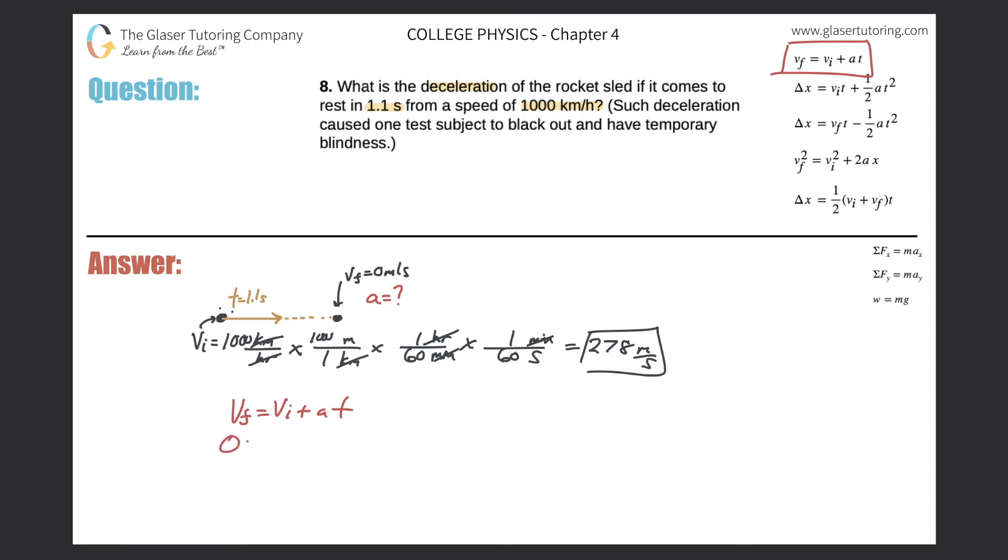Okay. So final velocity is zero. The initial velocity is 278 meters per second. My acceleration I'm trying to find, and the time was 1.1 seconds. Okay. So why don't we subtract the 278 on over? Subtract 278. So now we get negative 278 is equal to 1.1a. Just disregard the S here. That's just the time unit. I put it in, but I didn't mean to. Divide by 1.1 on both sides.